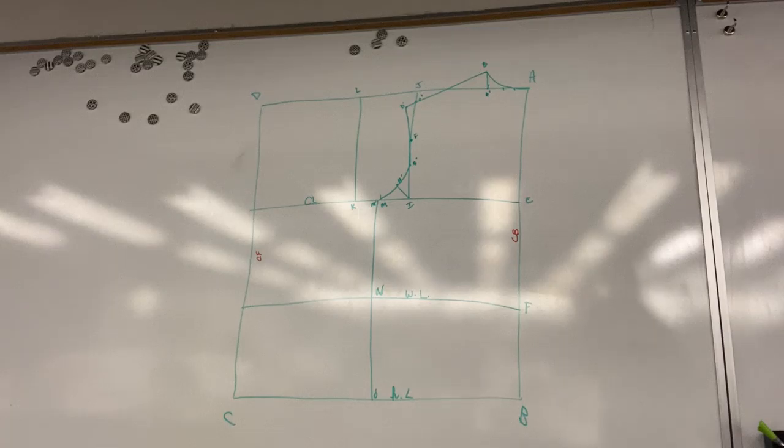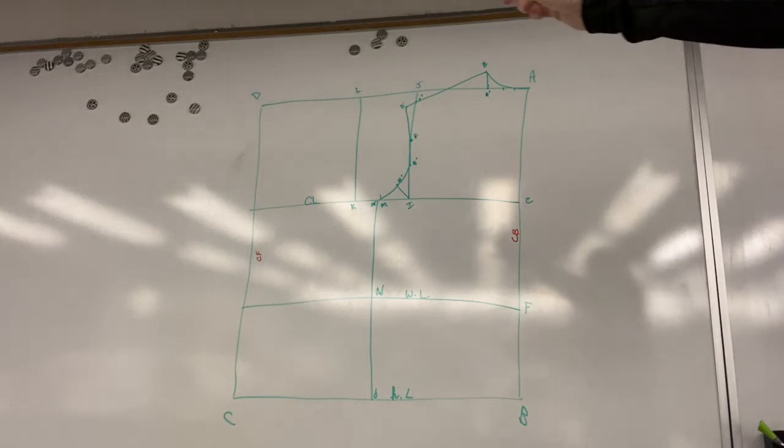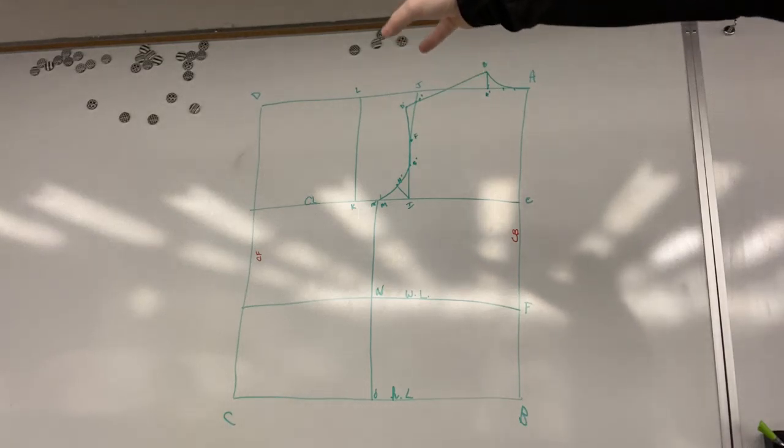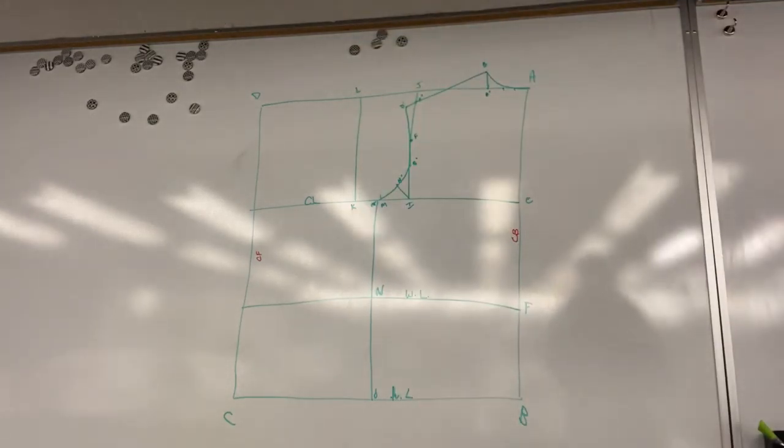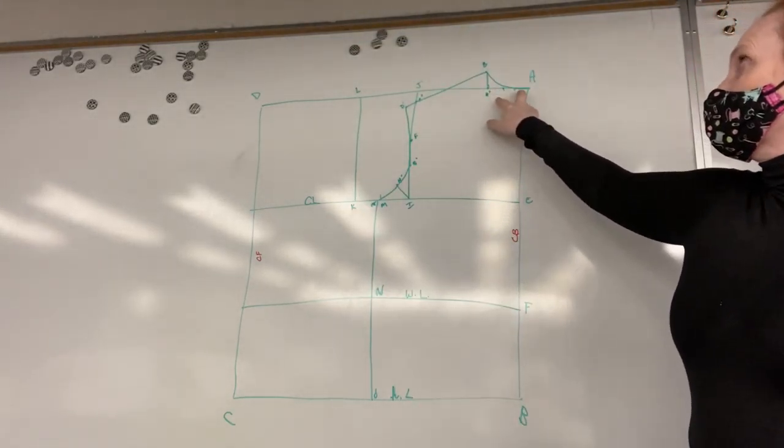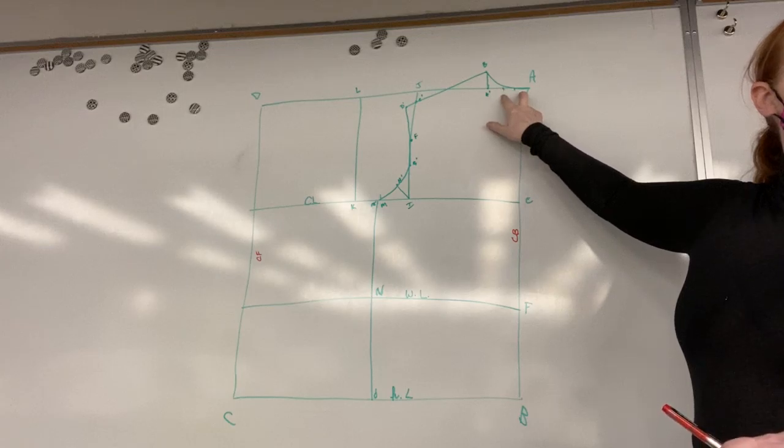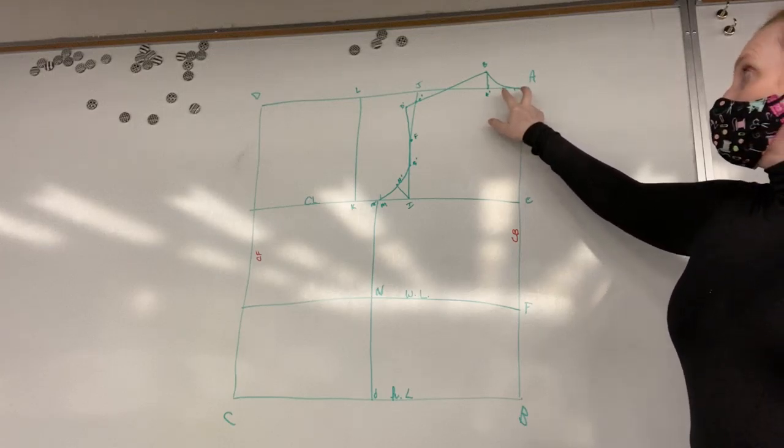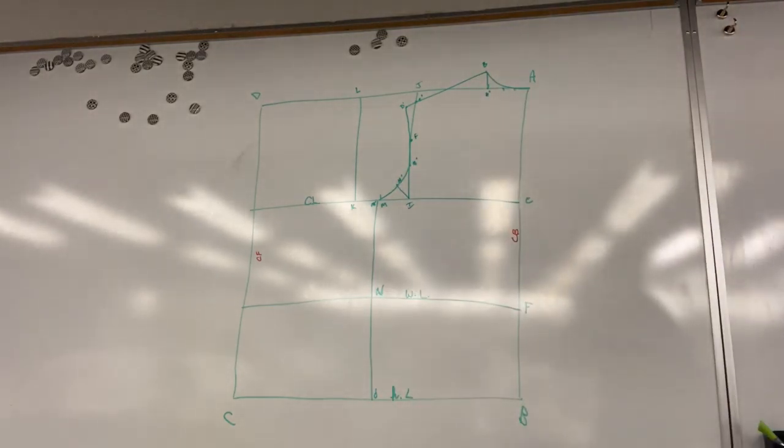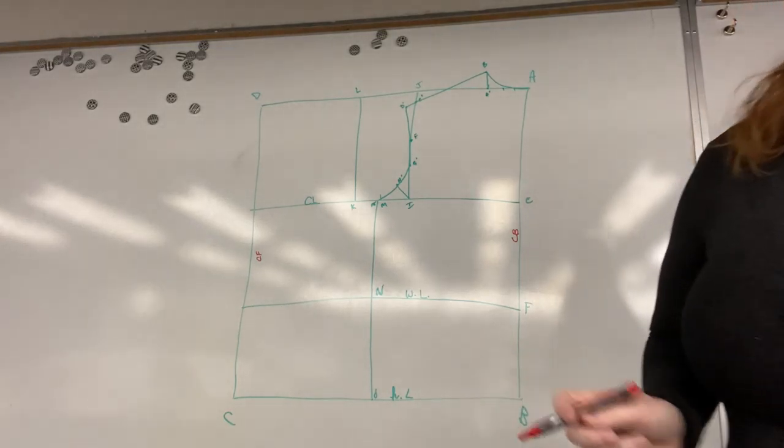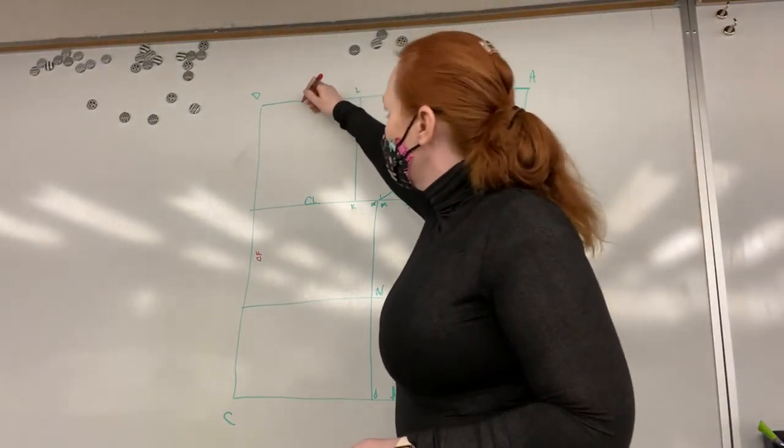So we are going to be starting up at the top left corner up there by D. And remember I told you that you needed to remember what this measurement was from A to A junior. You need to know that measurement because we are going to take that measurement plus a quarter of an inch and you are going to make K junior.